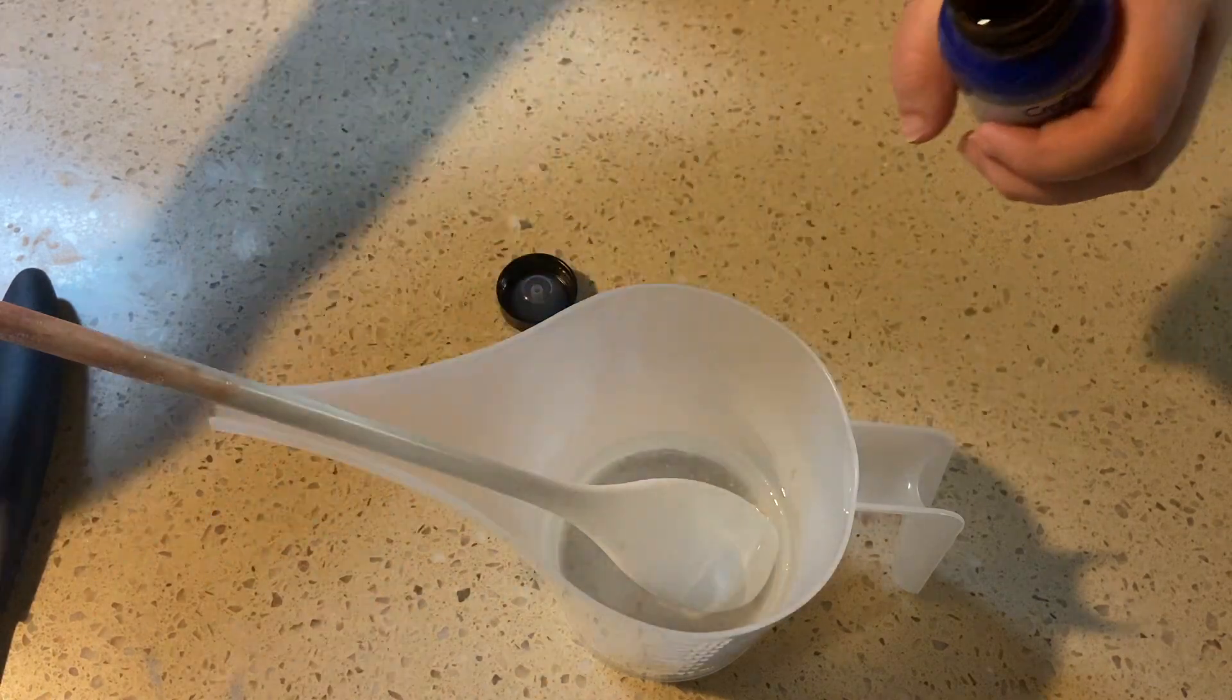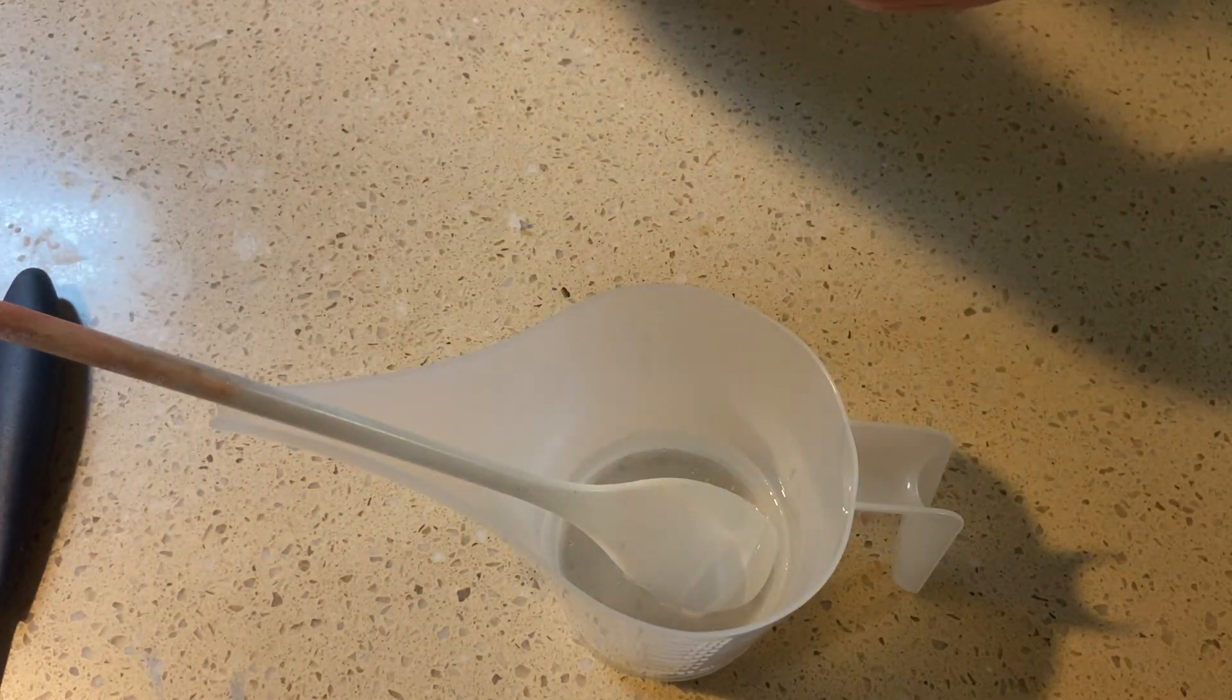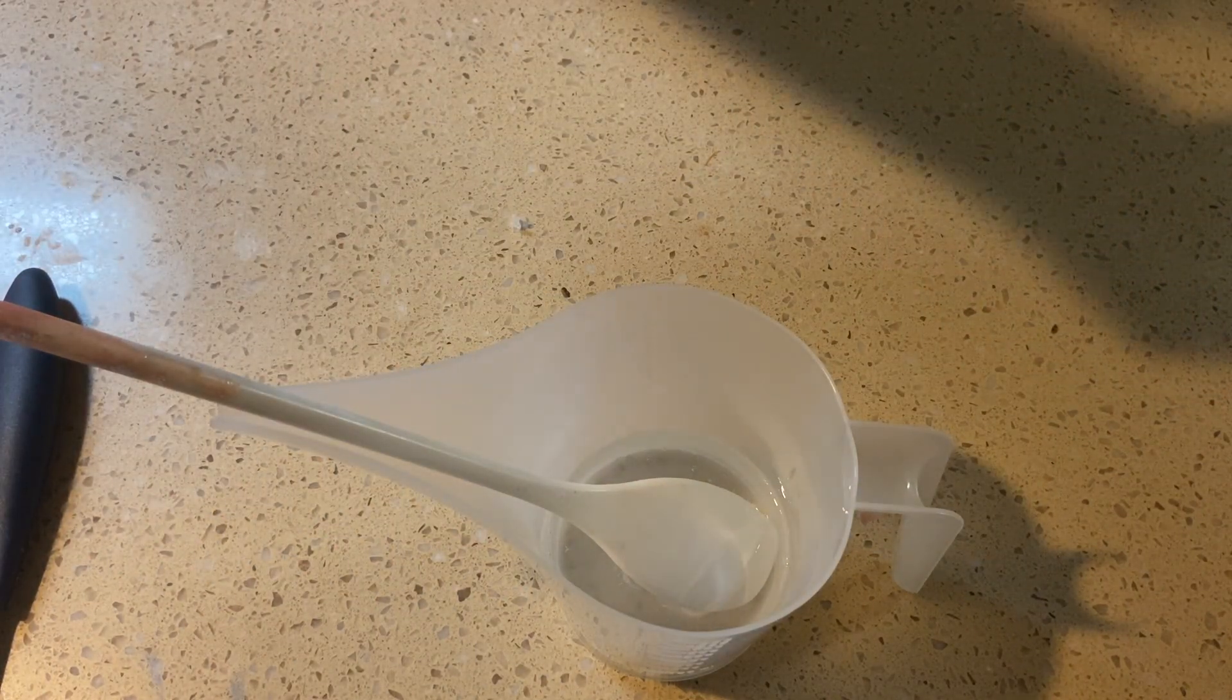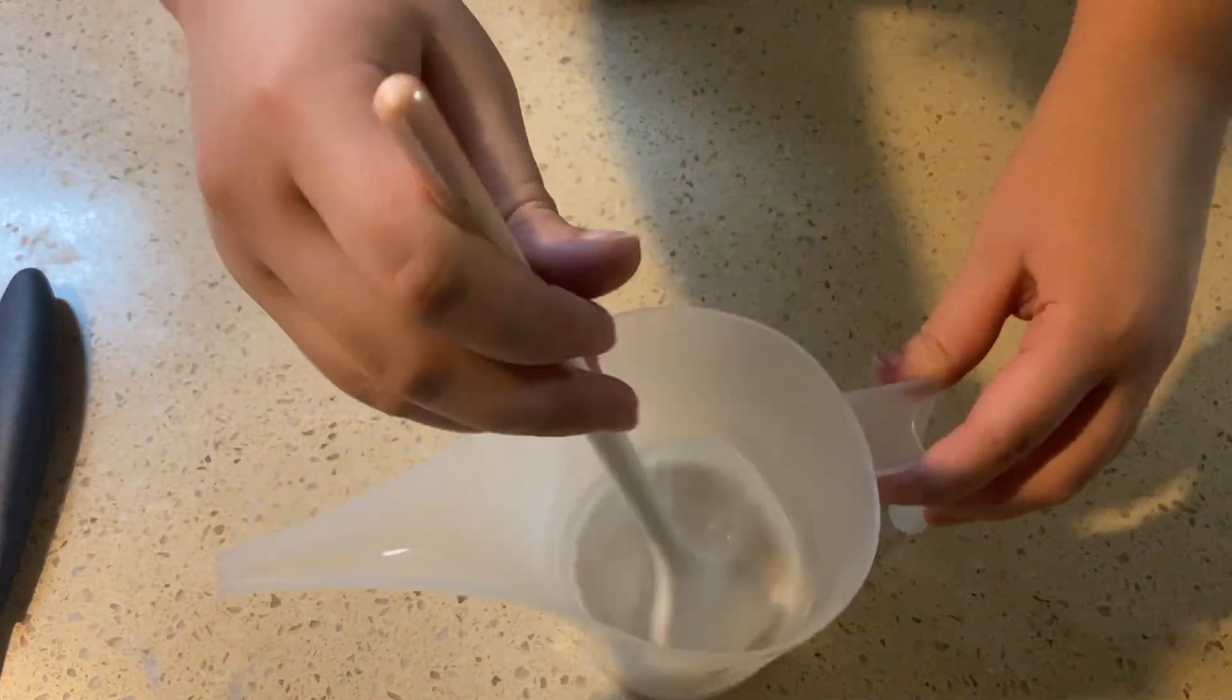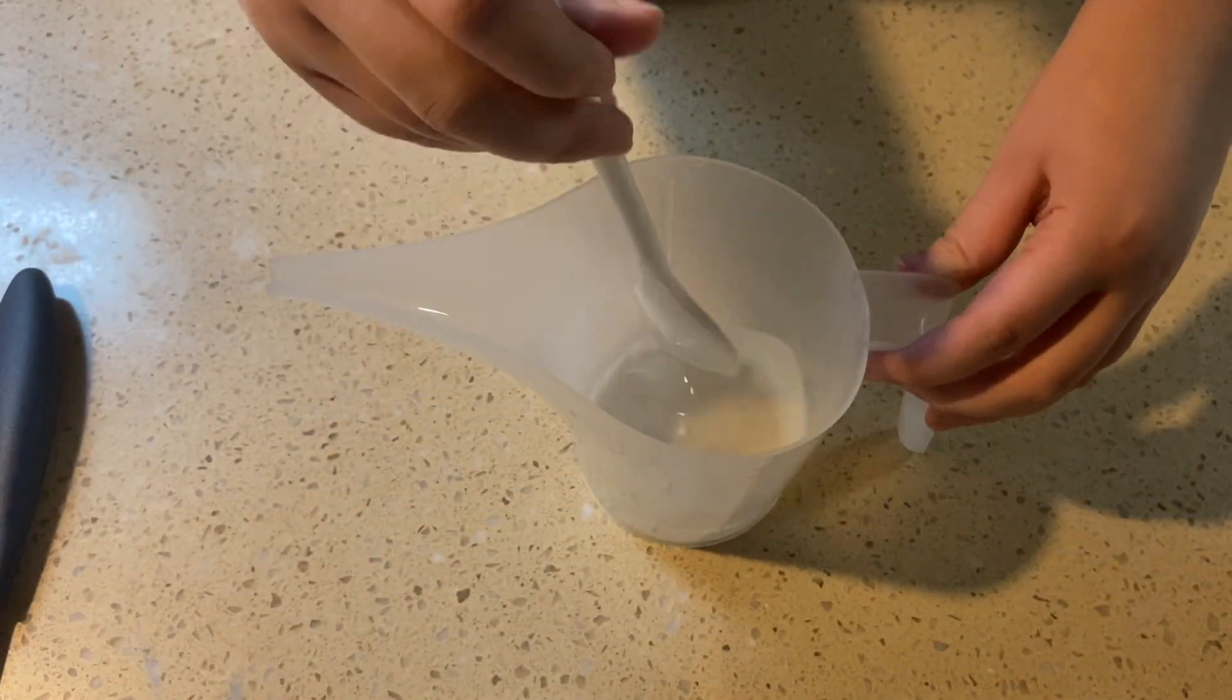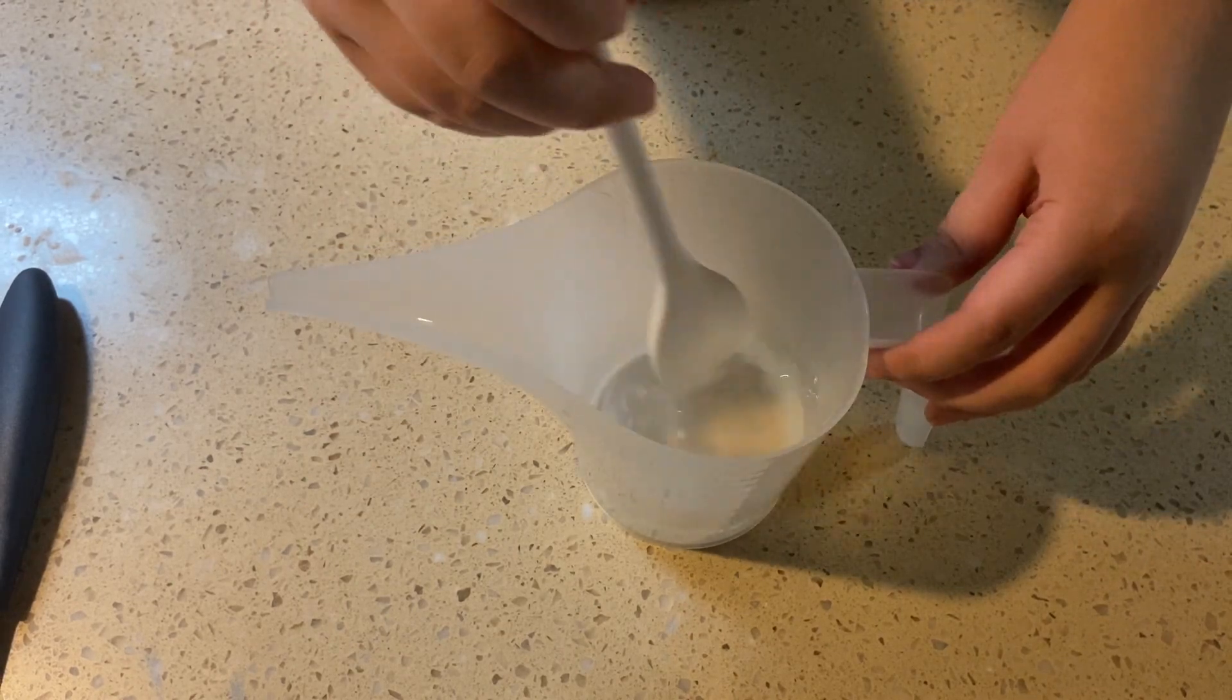A good rule of thumb is one to two milliliters of fragrance oil per bar of soap, assuming your soap bar is about average weight, not super small or super large. After the fragrance oil is all mixed in, it's time to add the gold leaf.